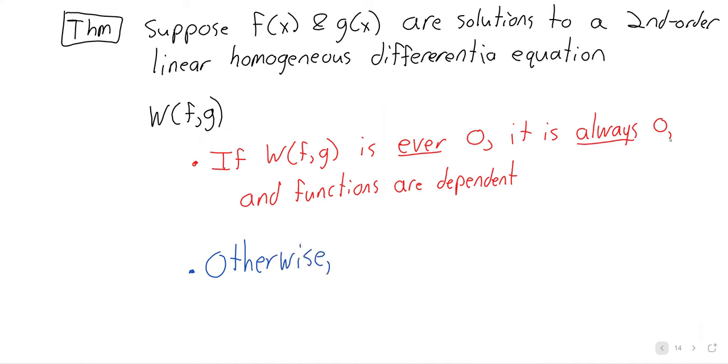So our two options are that the Wronskian is the zero function and they're dependent, or the Wronskian is not the zero function and f and g are independent.